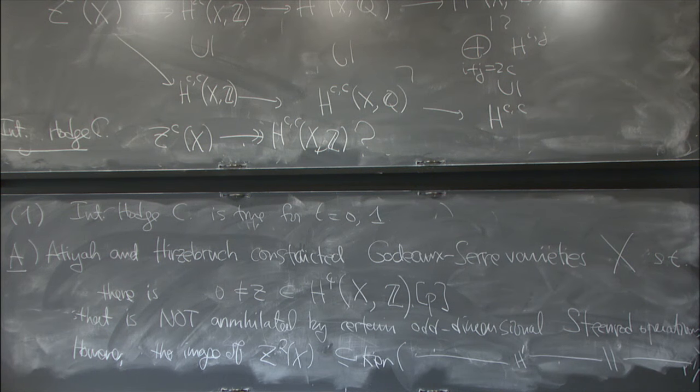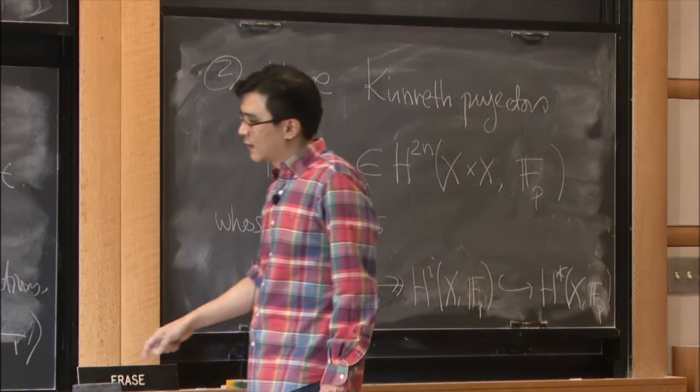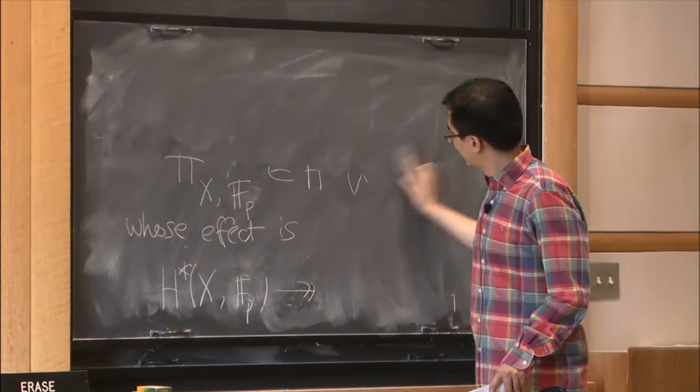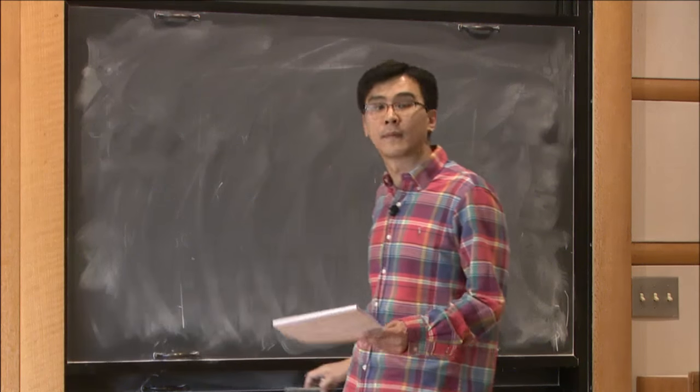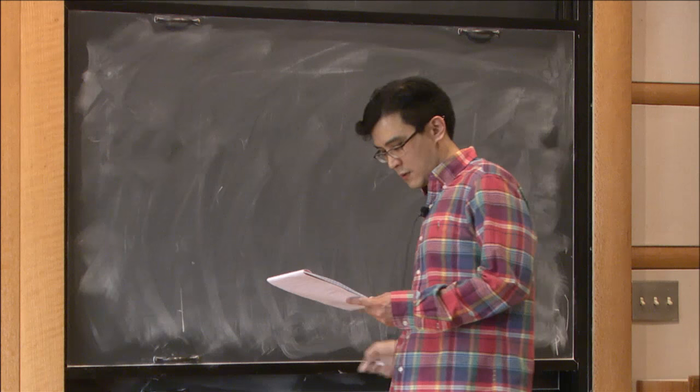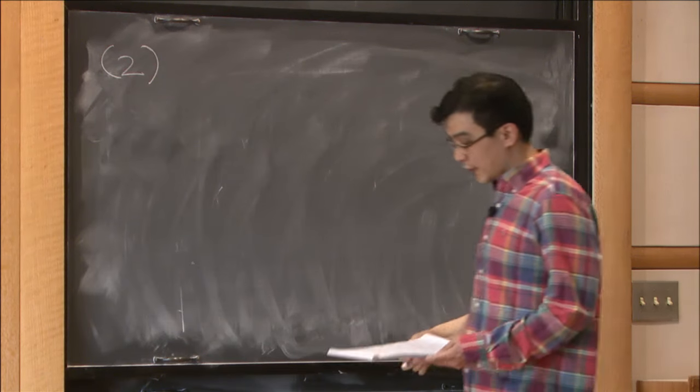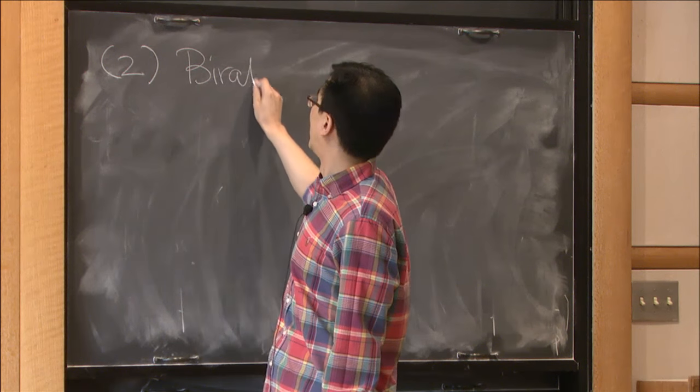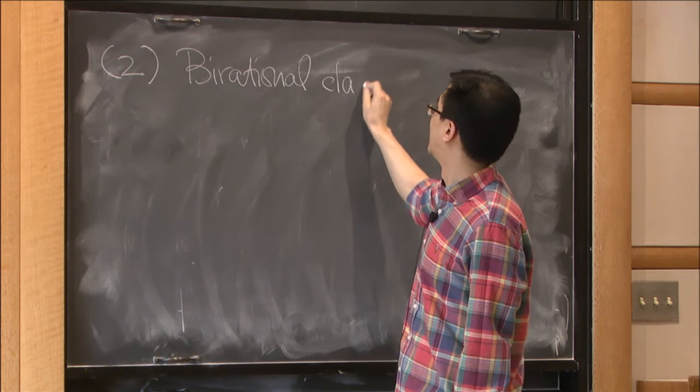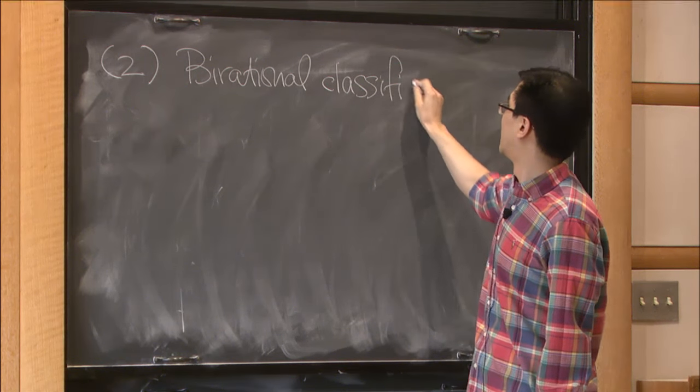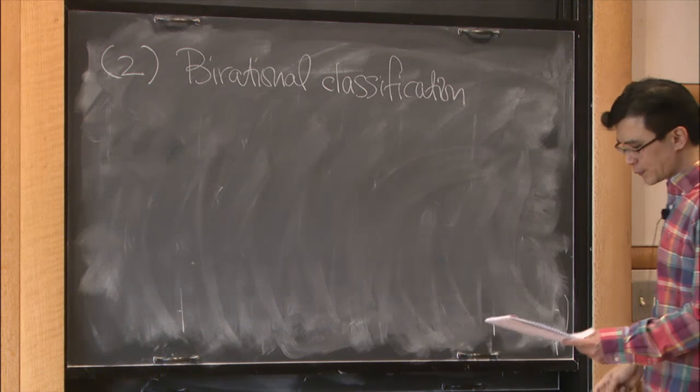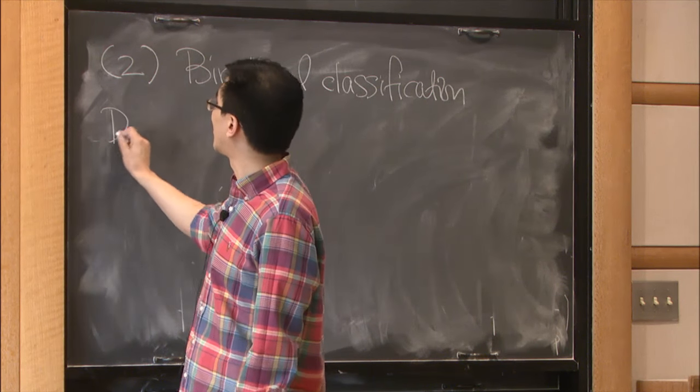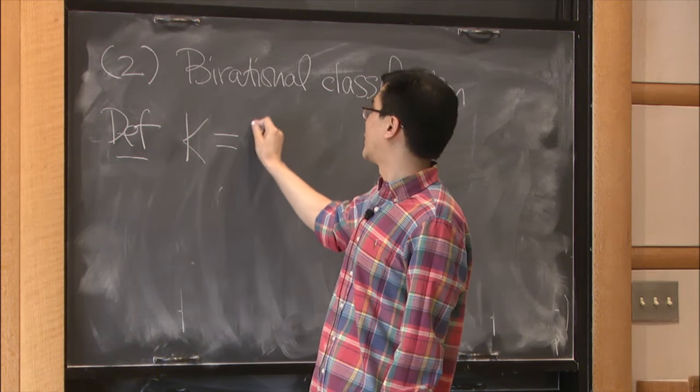So in order to prove that, they used a certain K theory. And later, this was somewhat clarified and expanded by Totaro, who gave another proof of this fact using complex cobordism. So this is kind of one algebraic topological reason why the behavior of torsion cohomology classes being algebraic is somewhat interesting. Now the second reason comes from geometry. And it comes from bi-rational classification of varieties.